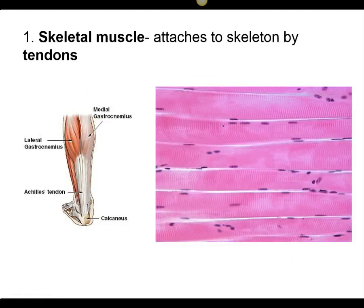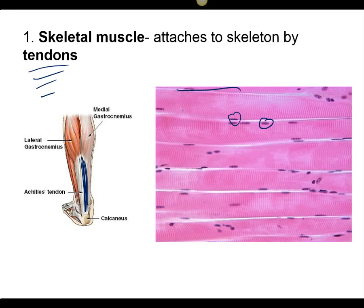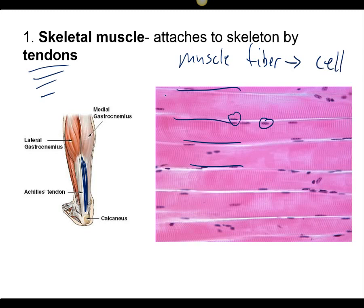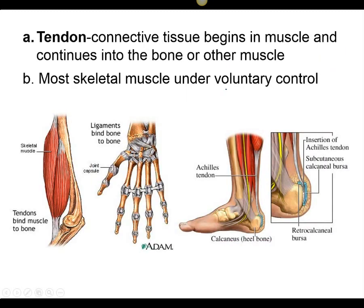Skeletal muscles have more than one nucleus and lots of mitochondria. They're attached to our bones by something called a tendon, not a ligament. They're stacked in long cylindrical columns called muscle fibers, where a muscle fiber is the same as a muscle cell.